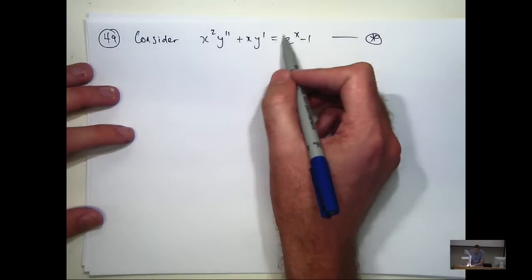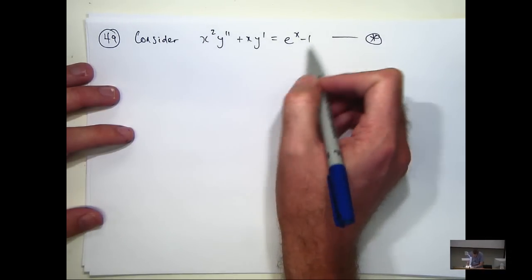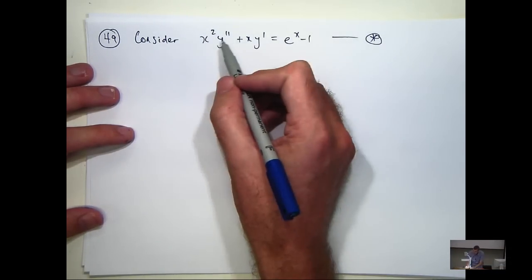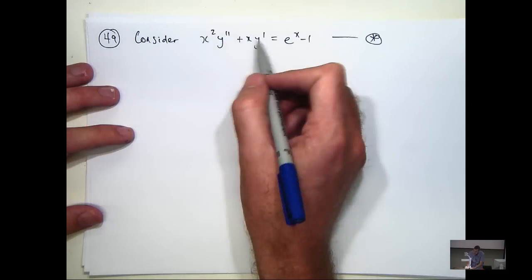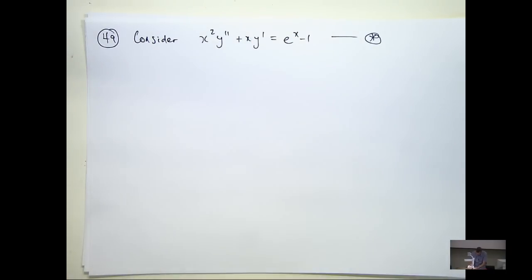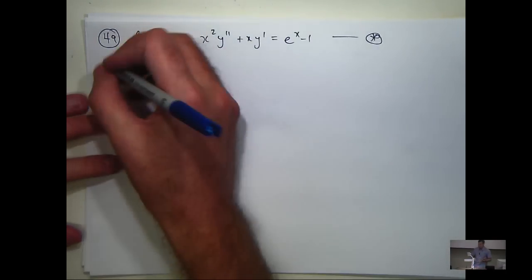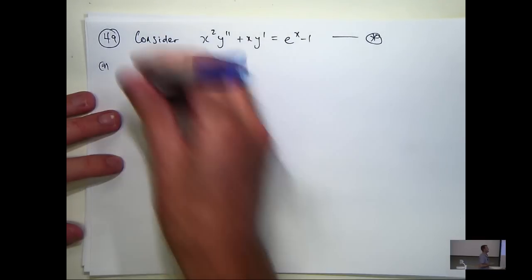Now, what you want to do is write the right-hand side as a series. You're going to assume Y is a series, so the derivatives are also going to be series, and then you're going to equate the coefficients in all these series. So the first part is to write down the series for this.